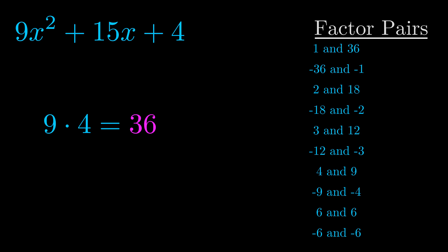The b value is the coefficient on the x term. That's the middle term, the one that we haven't done anything with yet. And really this is the only factor pair that we need.